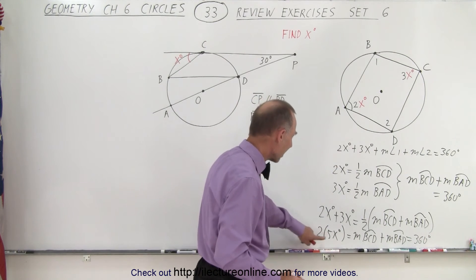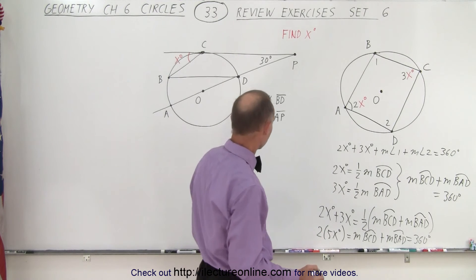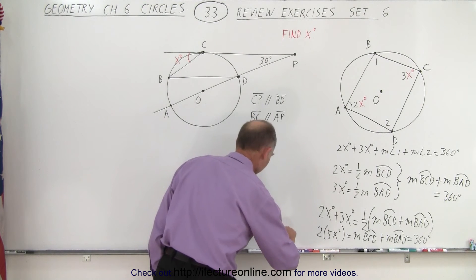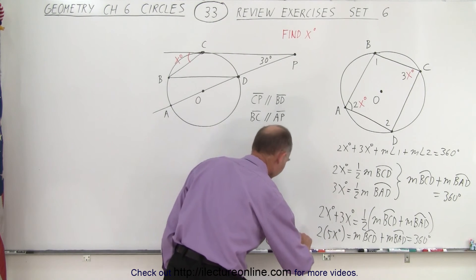So in other words, 10 times x degrees equals 360 degrees. So let me write that here. 10 times x degrees equals 360 degrees. So x equals 36 degrees. So that's the value for the first one.